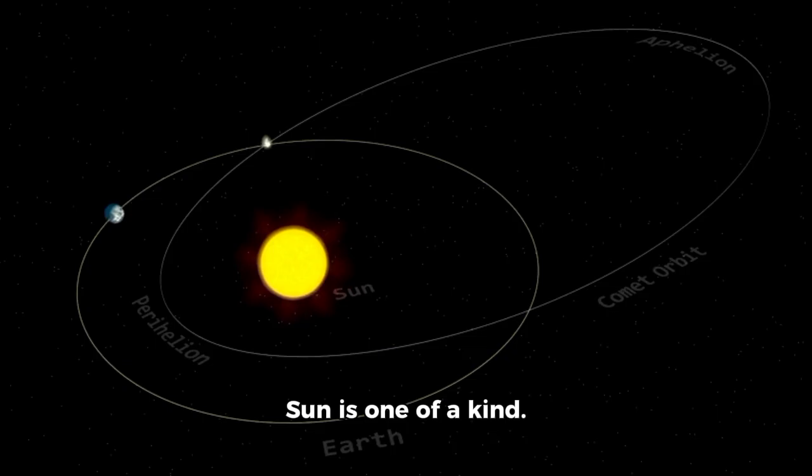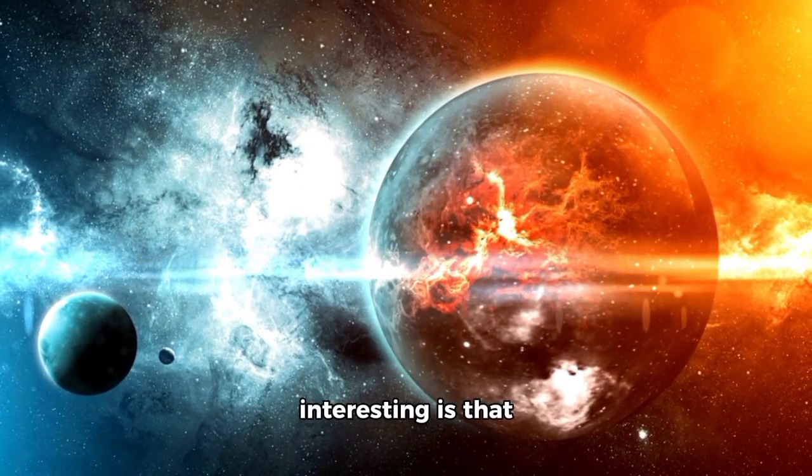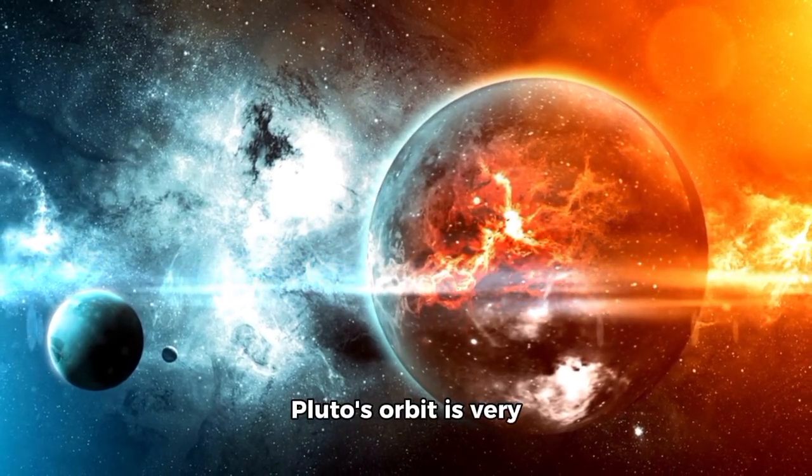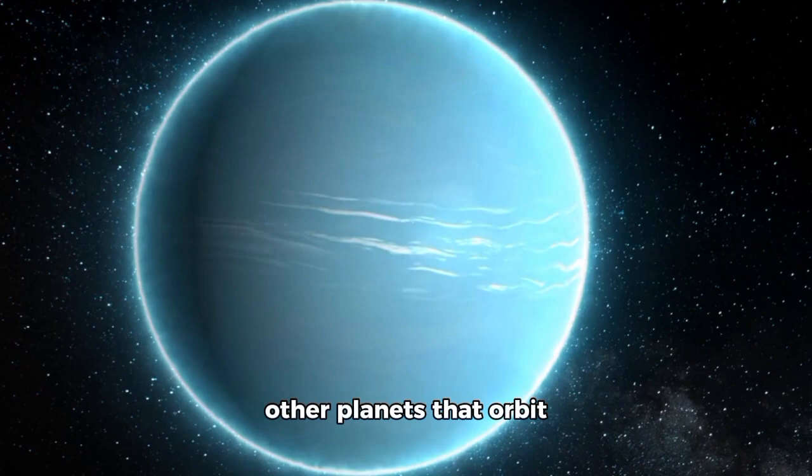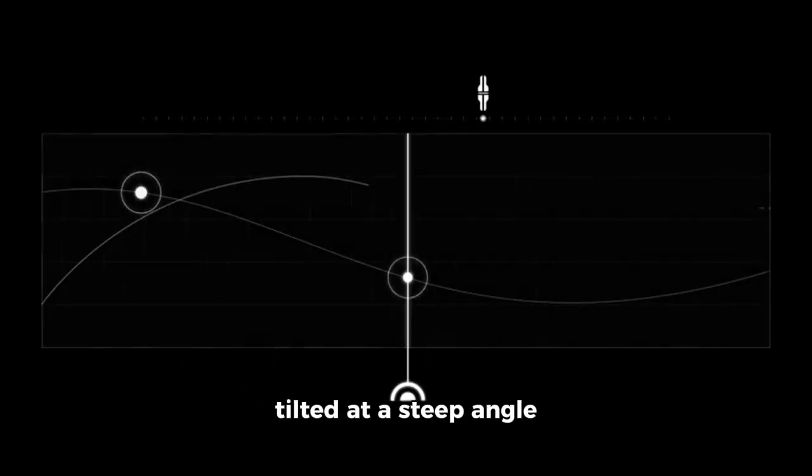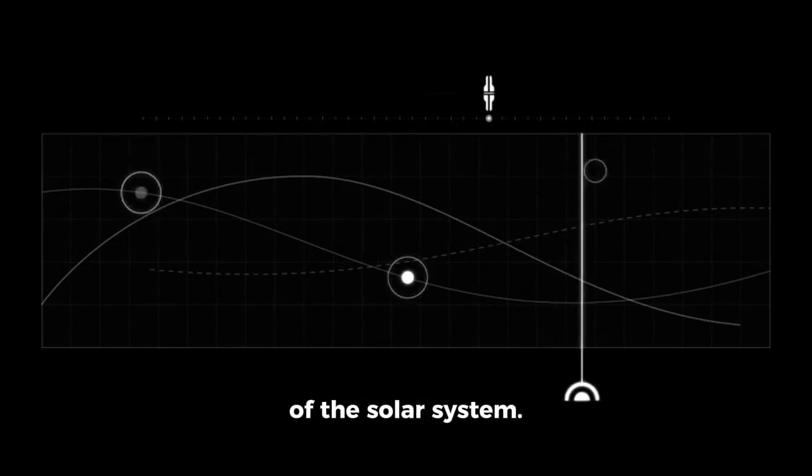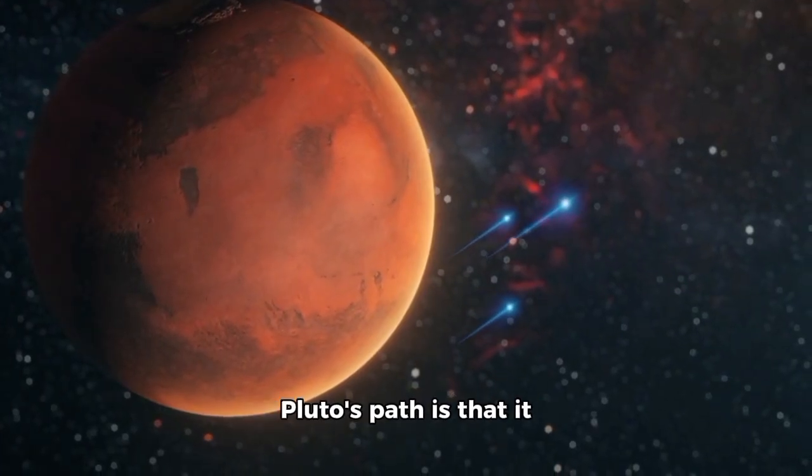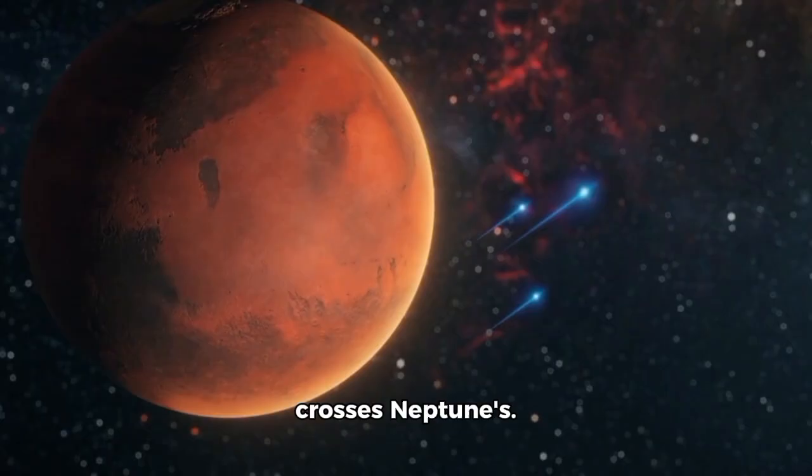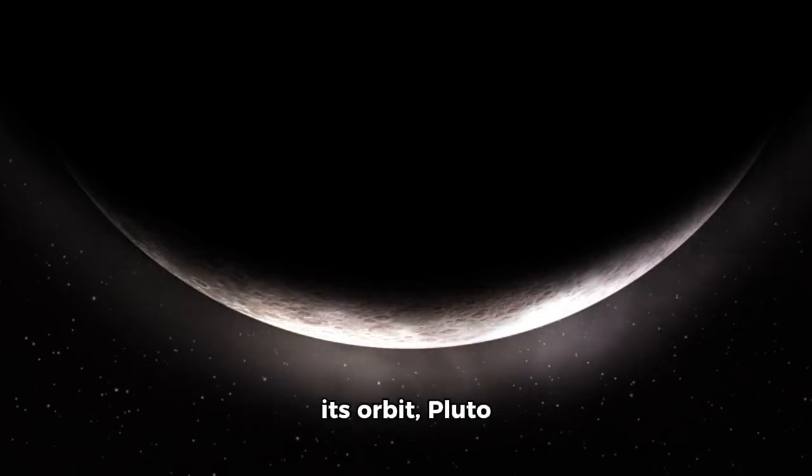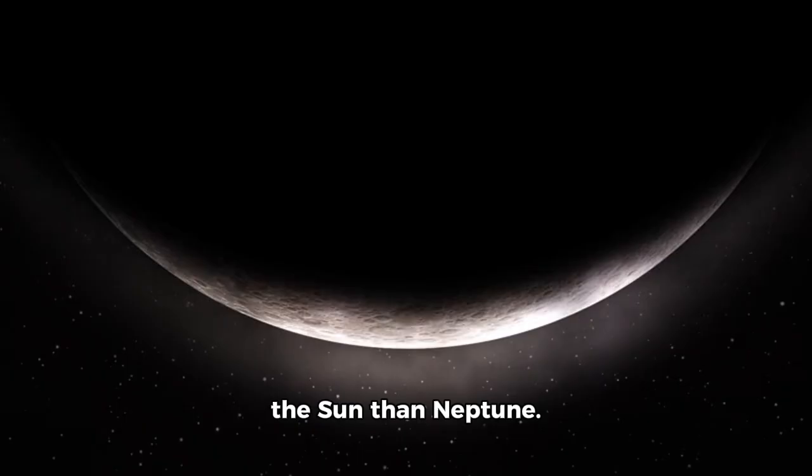Pluto's path around the Sun is one of a kind. It takes about 248 Earth years to make one trip, and since it was discovered in 1930, it still hasn't completed one full orbit. What's really interesting is that Pluto's orbit is very oval-shaped, unlike the other planets that orbit in near-circular paths. Plus, Pluto's orbit is tilted at a steep angle compared to the main plane of the solar system. One important thing about Pluto's path is that it crosses Neptune's. For about 20 years of its orbit, Pluto actually lies closer to the Sun than Neptune.